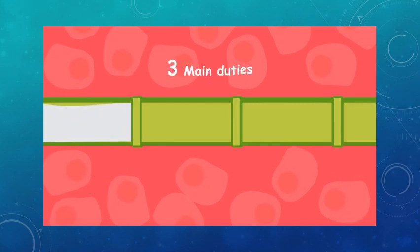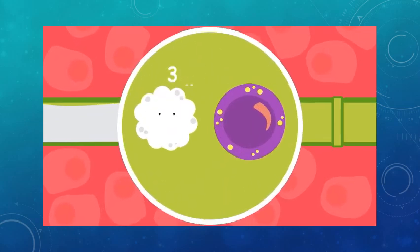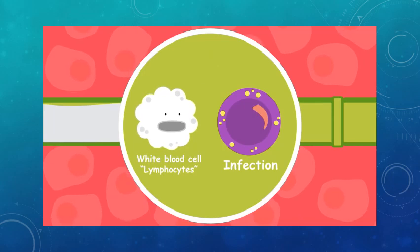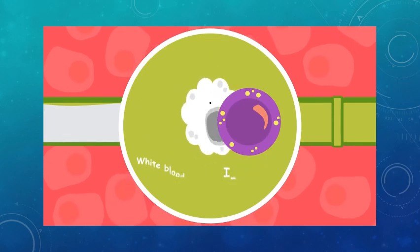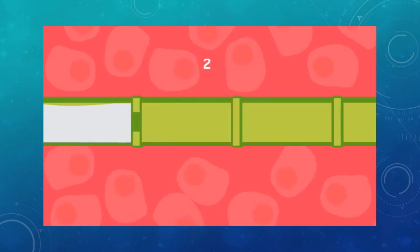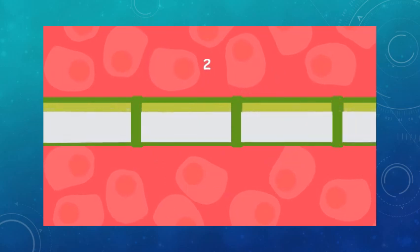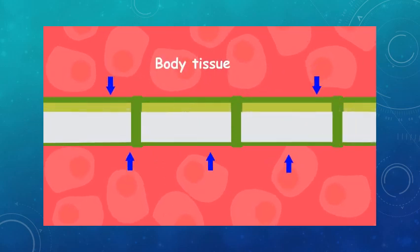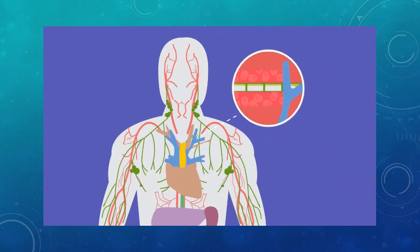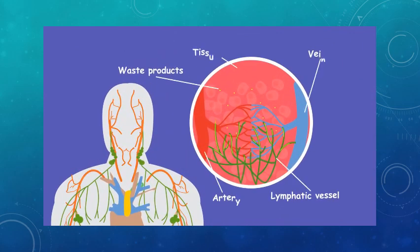Our lymphatic system has three main duties. One, it contains white blood cells called lymphocytes which are used to fight infection. Two, it acts as a one-way drainage system transporting fluid from body tissues into the blood circulation. Three, it gets rid of waste products produced by cells.